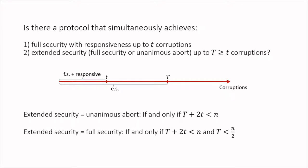In this paper, we investigate the natural question of whether it is possible to leverage synchronous MPC protocols to also achieve the nice feature that asynchronous protocols have, namely responsiveness — meaning that parties obtain the output at a time that is as fast as the network allows. More concretely, we investigate if there is a protocol that simultaneously achieves full security with responsiveness up to small t corruptions, similarly to an asynchronous protocol, and moreover achieves up to large T some form of extended security — such as full security or unanimous abort — which are the guarantees we would expect from a synchronous protocol.